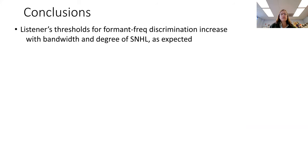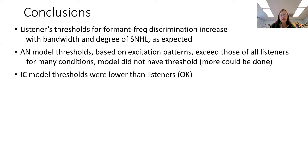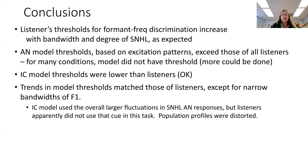In conclusion, listener thresholds increased with bandwidth and degree of hearing loss, as expected. The auditory nerve model thresholds based on excitation patterns exceeded those of the listeners, and in many conditions there was no threshold for the model. The IC thresholds were always present and lower than those of the listeners. The trends in general match those of the listeners nicely, except for narrow bandwidth at the F1 frequency, where the model depends on large fluctuation cues even if they're in the wrong channels, but the listeners did not seem to be able to use that cue.